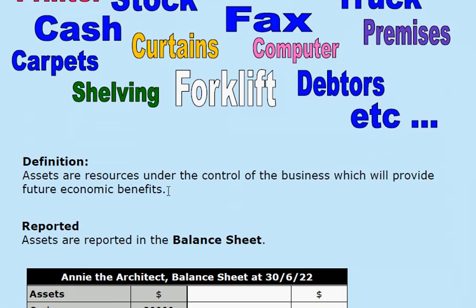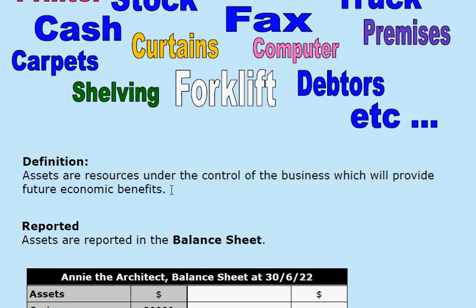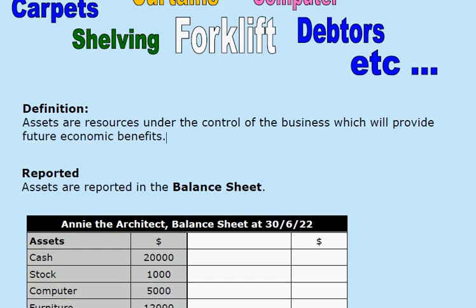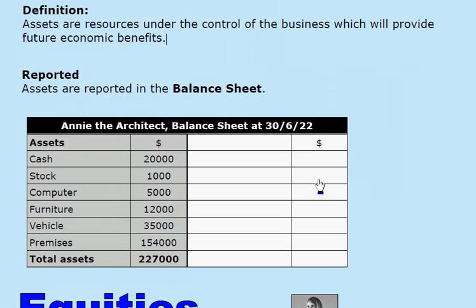Here is a definition. Assets are resources under the control of the business which will provide future economic benefits. Assets are reported in the balance sheet, which is one of the major accounting reports, and we'll learn a lot more about balance sheets as time progresses.